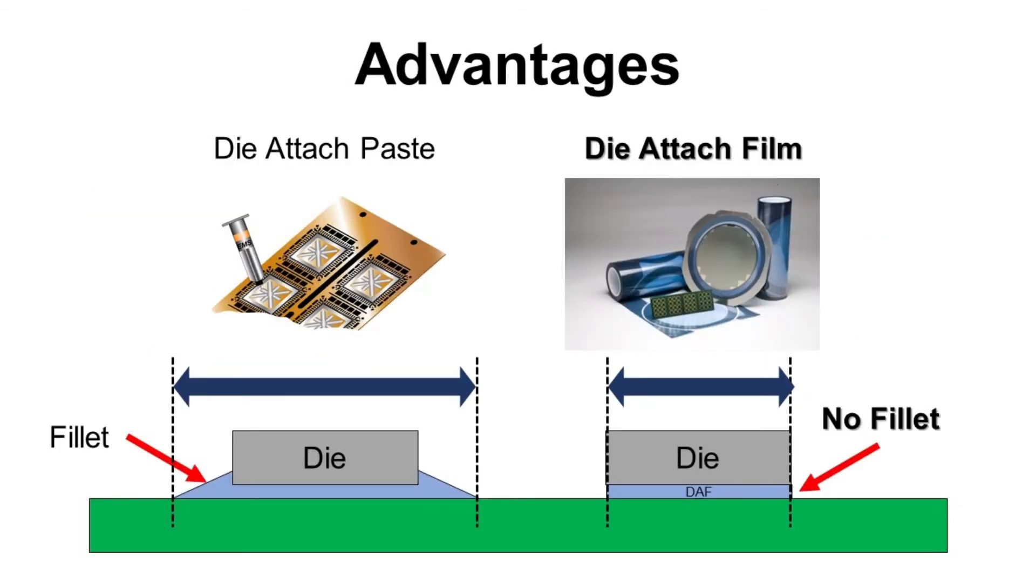What kinds of benefits can we get from die-attach film over die-attach paste? Die-attach paste dispenses on the substrate and then attach die. In that case, there is a fillet.